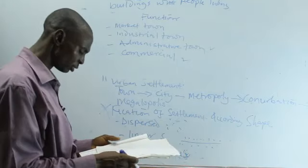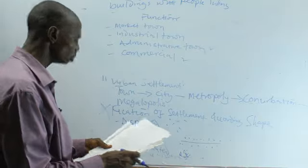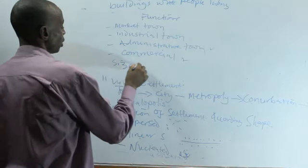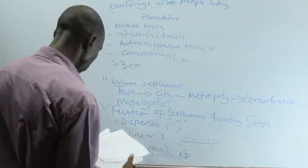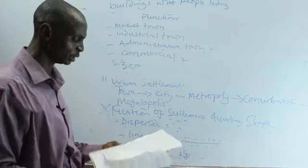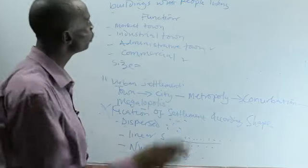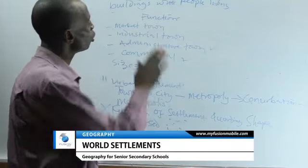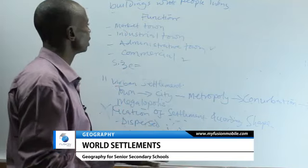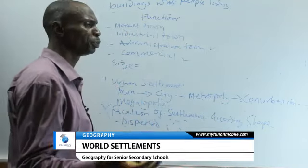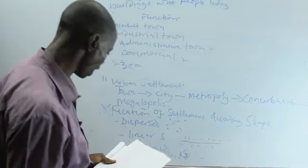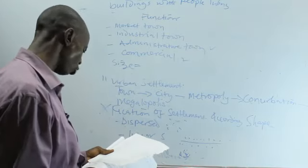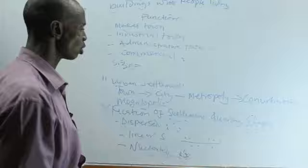These are classifications of towns based on functions. Finally, according to size classification, we talk about town, city, metropolis, conurbation, and megalopolis. With this, we have treated world settlement — what settlement is, what encourages people to come together (access roads, security, water, and fertile soil), and classification according to types, functions, size, and shape.